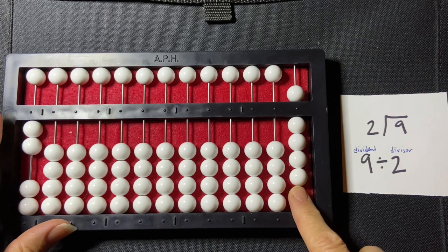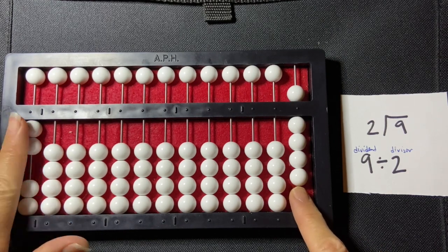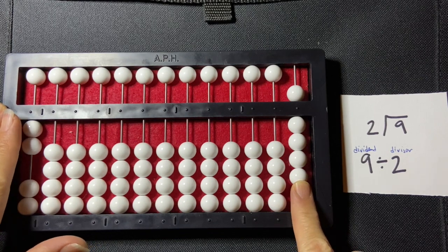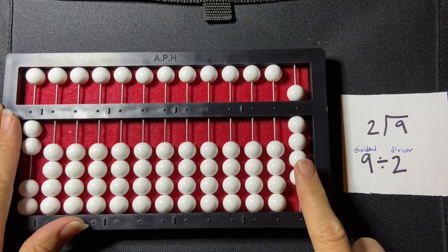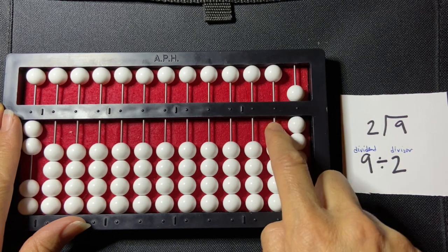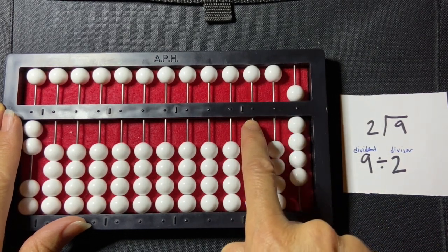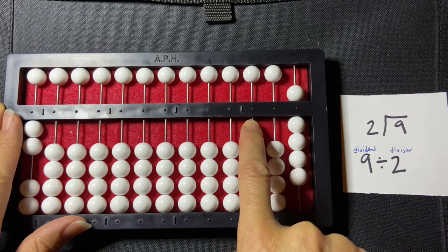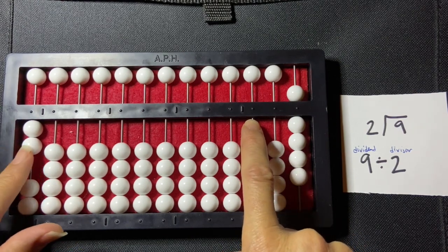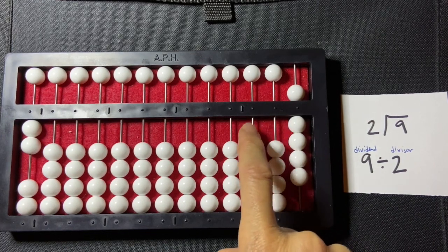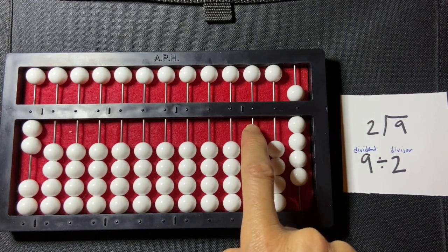So now what I need to do is compare my divisor and my dividend. If the divisor is equal to or smaller than the first digit in the dividend then I skip a rod and begin writing my quotient on the next rod over. So that is the case in this place. 2 is smaller than 9 so I need to skip that rod and start writing in the hundreds place.